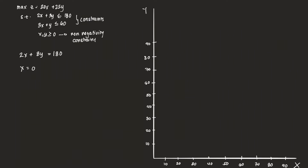For the first constraint, we set x equal to zero to get the y-intercept, which gives y equal to 180 over 3, equal to 60. Then setting y equal to zero, we solve for x and get 180 over 2, which is equal to 90.